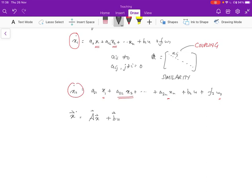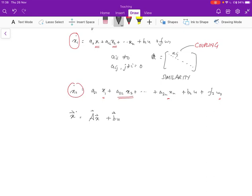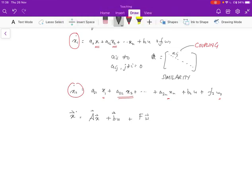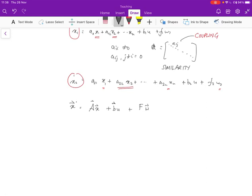It's a single input system, so u is a scalar, plus f w, where f is a matrix and w is a vector. And so this representation concisely denotes how the system evolves with time.